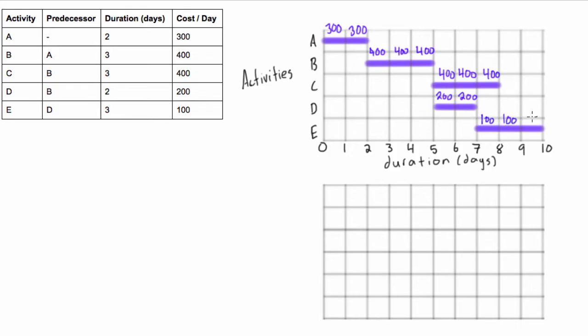So we'll go in and write that. So that's how much money it's costing us each day for the various activities. Now what we want to do with this information is we want to basically put it on a histogram. So we'll use the space down here.